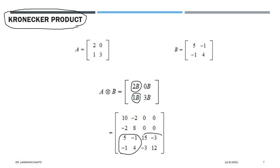Completing the Kronecker product: A was 2×2 and B was 2×2, and the resulting matrix from the Kronecker product is 4×4 — the dimension has increased. This kind of multiplication is really interesting and we will see what application it finds in understanding multivariate regression or the multivariate linear model.